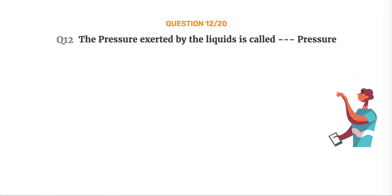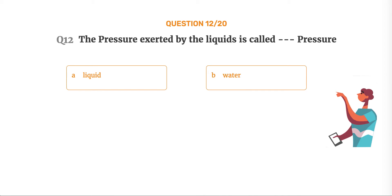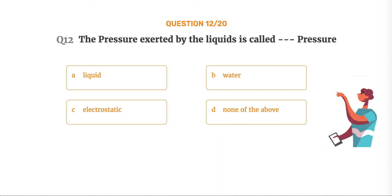Question number 12. The pressure exerted by the liquids is called blank pressure. Option A: Liquid. Option B: Water. Option C: Electrostatic. Option D: None of the above.